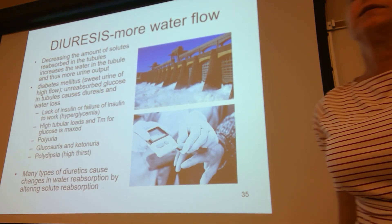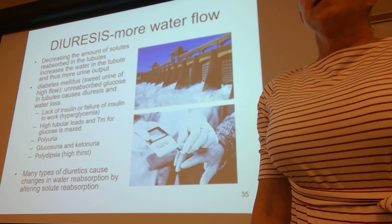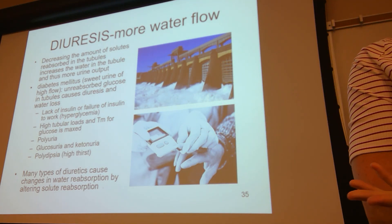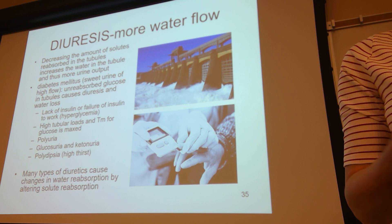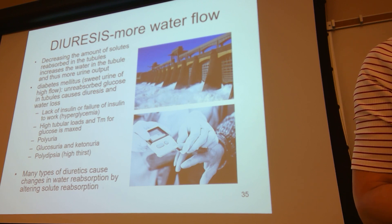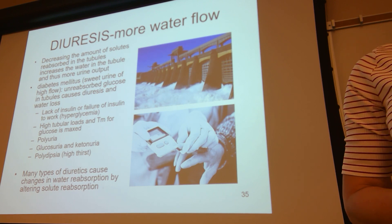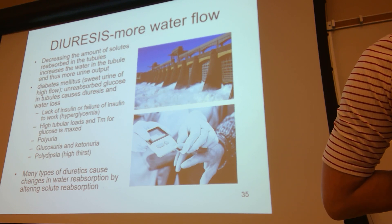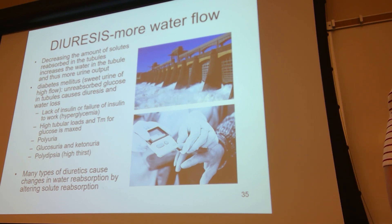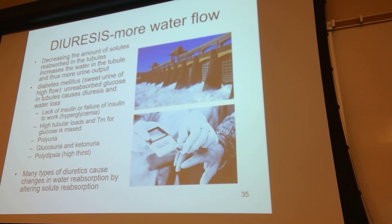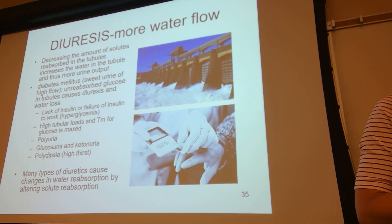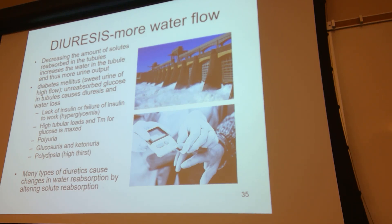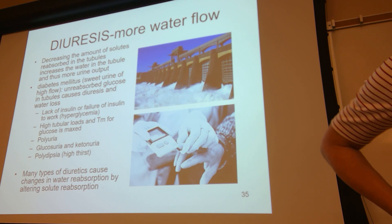We talked about diabetes mellitus versus diabetes insipidus. Diabetes means high urine flow. Mellitus means of sweet taste, because you have glucosuria as a problem. In diabetes insipidus, glucosuria is not a finding you have.